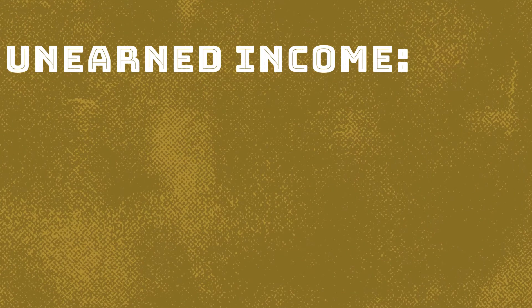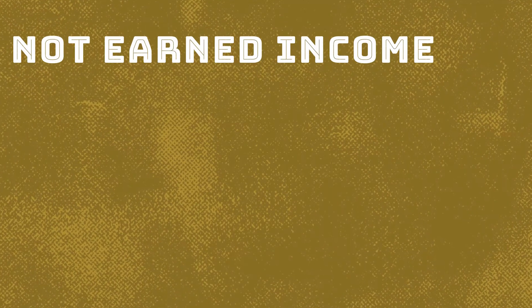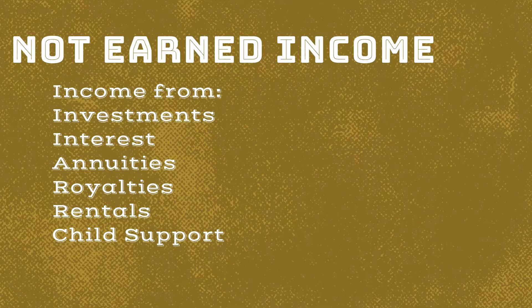Today we're going to talk about who is eligible for an IRA or a Roth IRA — and that is just about everyone with earned income. Earned income is money you earn from your job or self-employment: salaries, wages, commissions, bonuses, self-employment, freelance and contract work, and other things like alimony, combat pay, and accrued vacation pay. Things that don't count as earned income include investment income, rental income, dividends, interest, child support, and royalties from prior work.